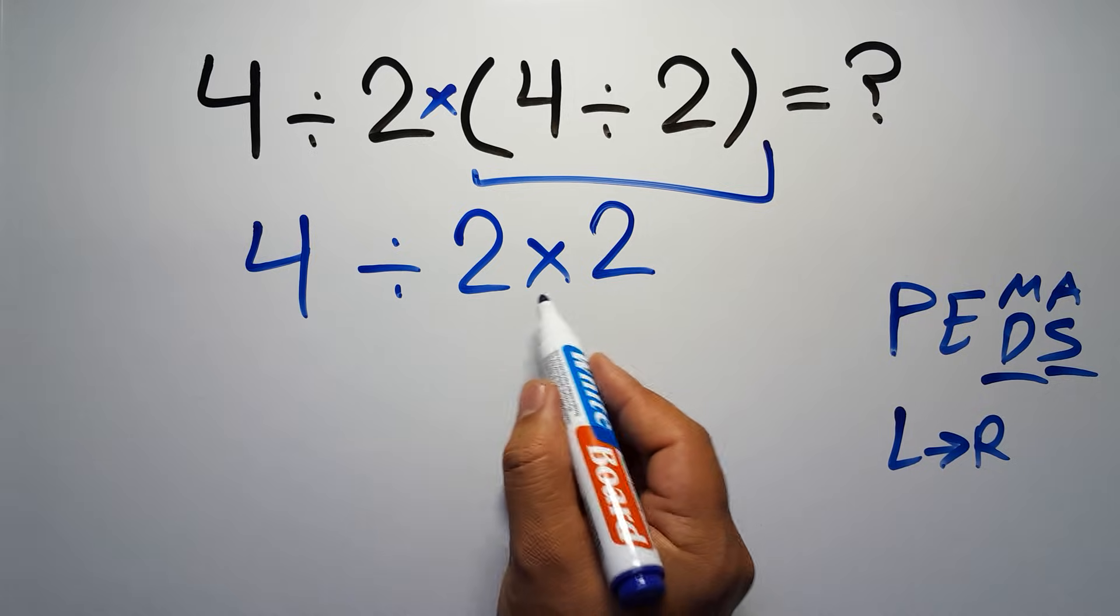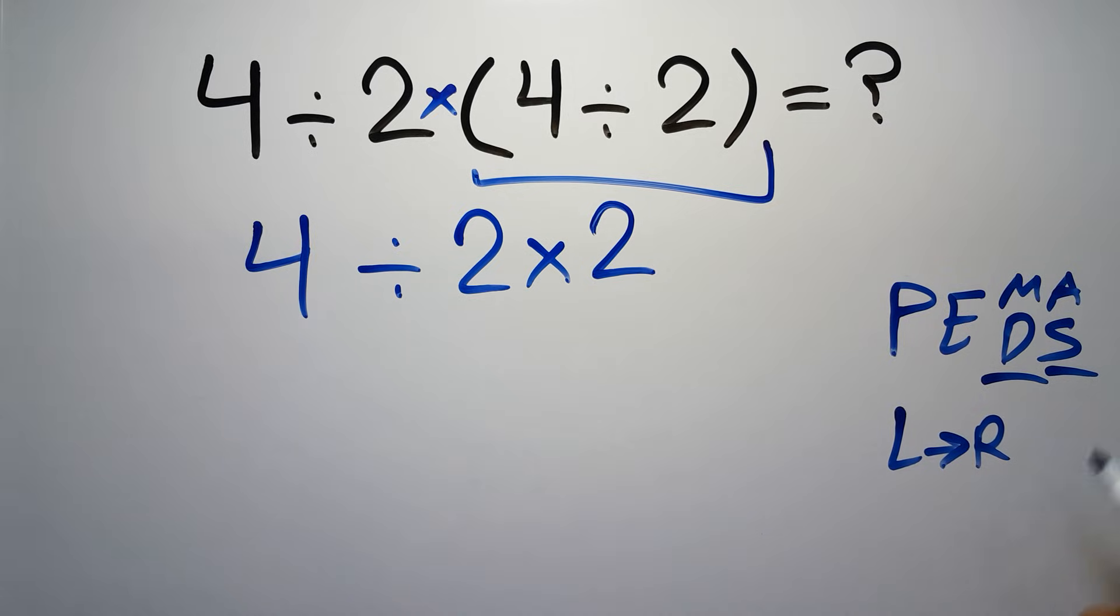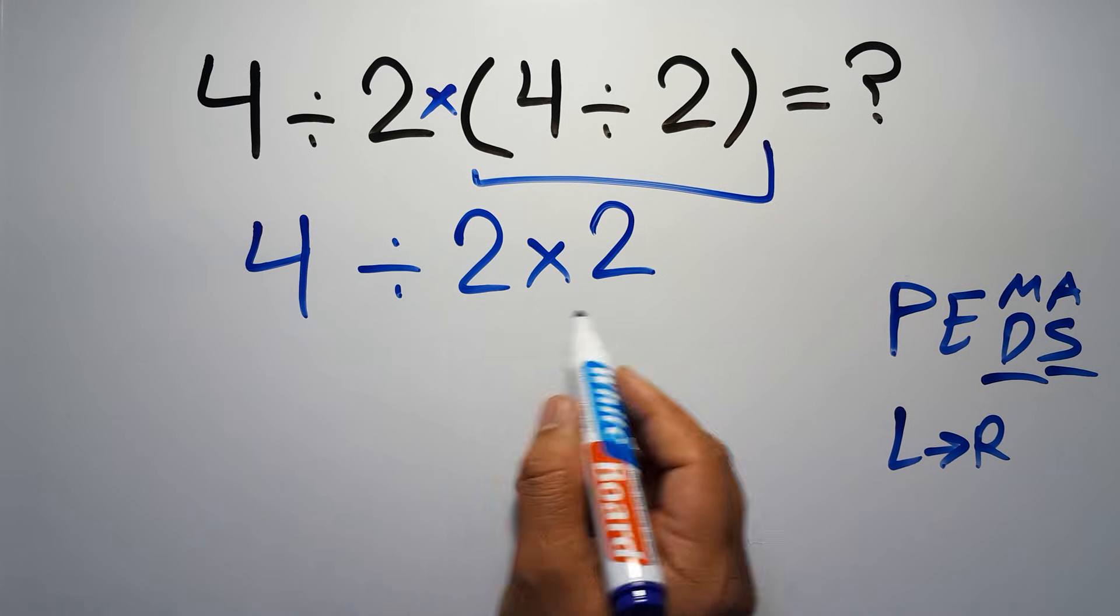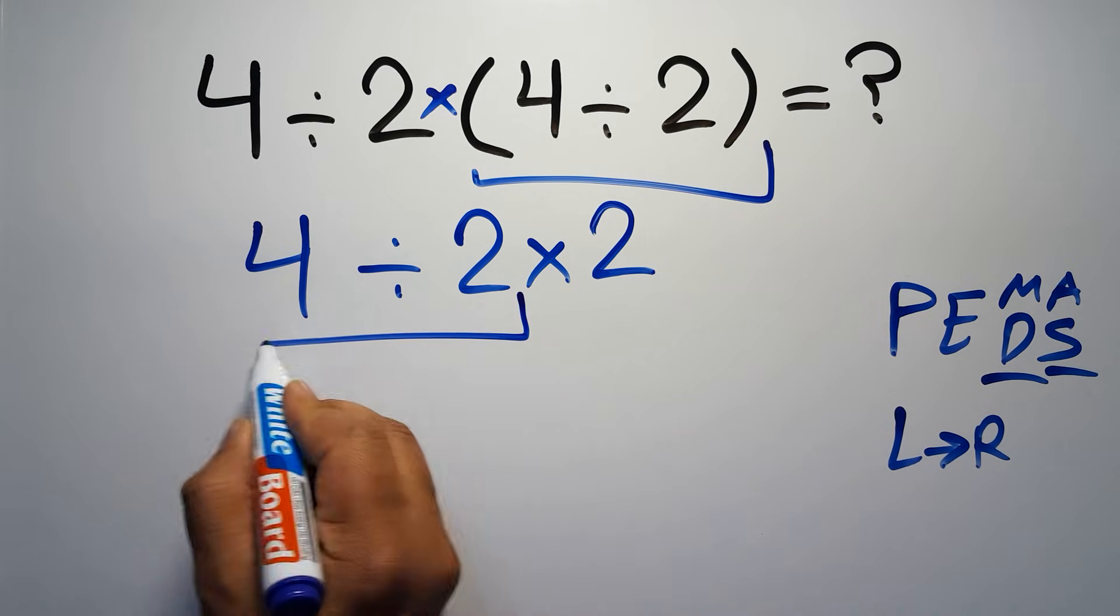Now we have one division and one multiplication. As I said, multiplication and division have equal priority and we have to work from left to right, so first we have to do this division. 4 divided by 2 is just 2.